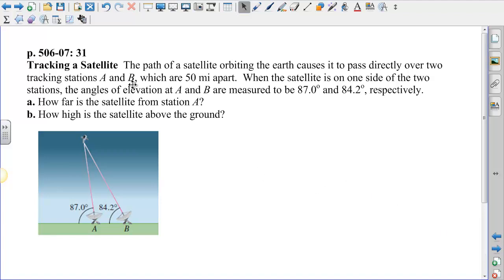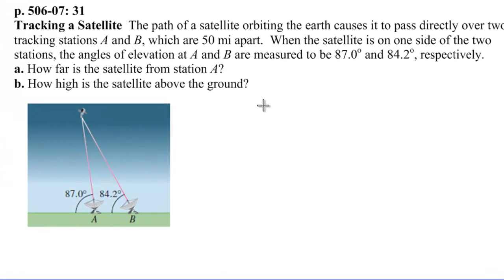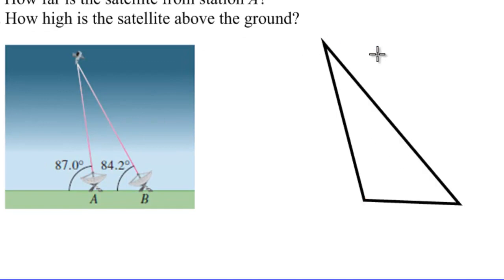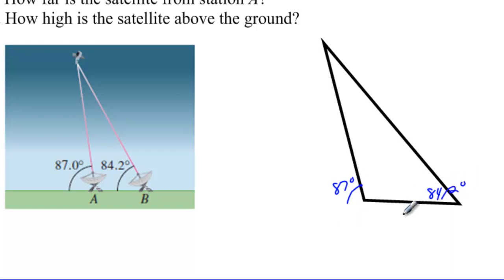I'm going to draw this figure as a triangle, a little bit bigger so we have some room to write. There's our triangle. This angle at A is 87 degrees, this angle at B is 84.2 degrees, and this distance between the two stations is 50 miles.